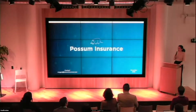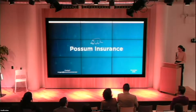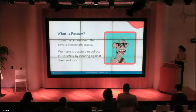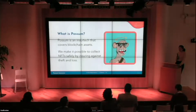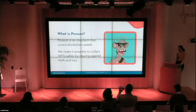My name is Maggie McInnes. I am the founder of Possum Insurance. Possum is an MGA that insures non-fungible tokens, which are commonly called NFTs. We protect customers against theft and loss of the NFT, which primarily occurs through phishing.